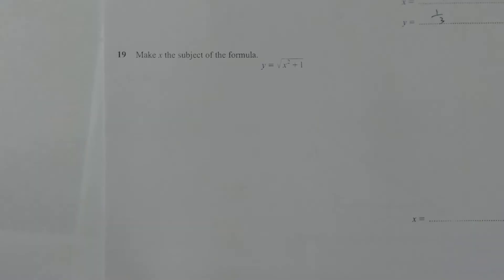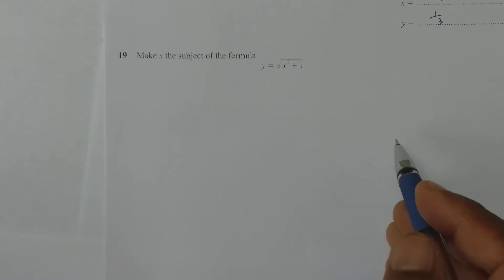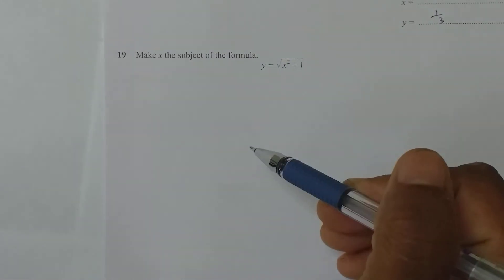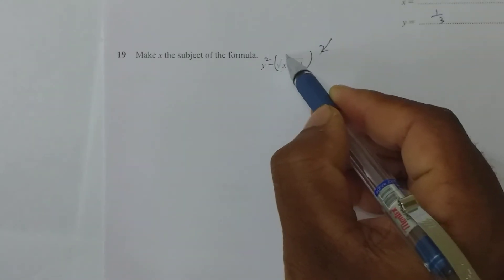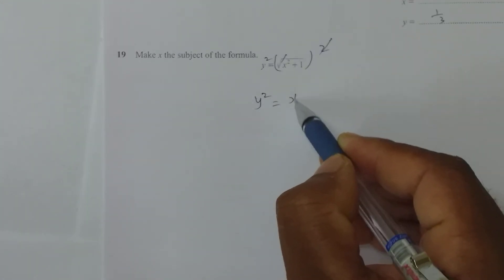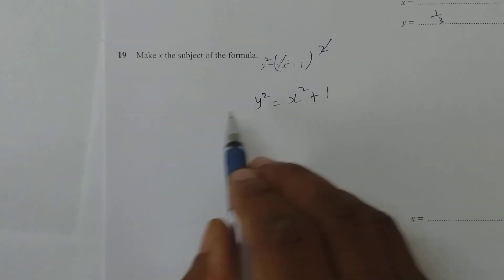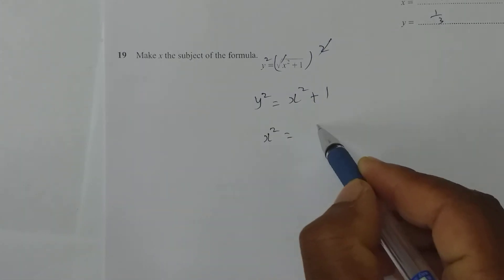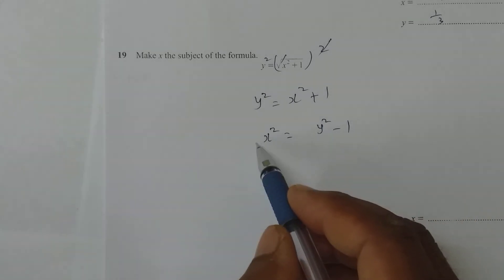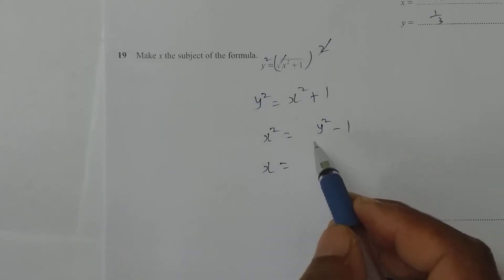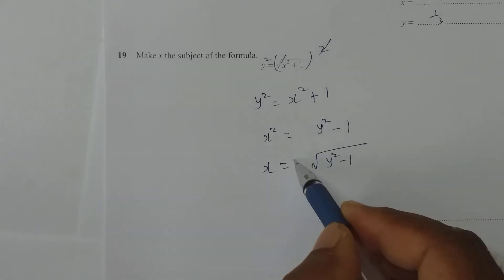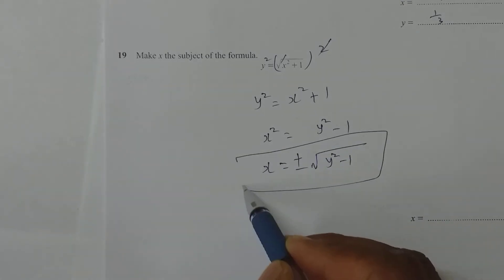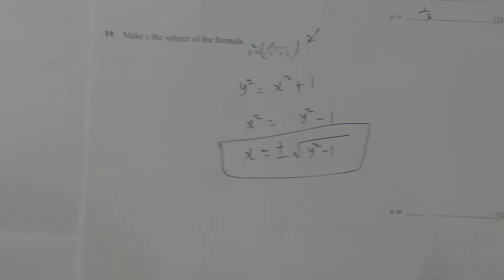Next one. Make x the subject of the formula y = √(x²+1). First, to remove the square root, square both sides. y² = x² + 1. To make x the subject, send 1 to the other side: x² = y² - 1. When square goes to the other side, it becomes root. And whenever it is a root, you need to place plus or minus. So x = ±√(y²-1).